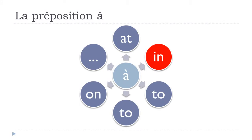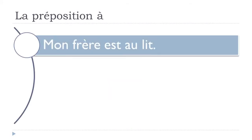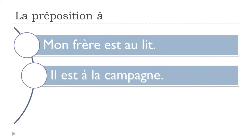Now the second category: the 'in' concept. First example: 'mon frère est au lit' — mon frère means my brother, lit means bed, so 'mon frère est au lit' means 'my brother is in bed'. Second example: 'il est à la campagne' — campagne means countryside — 'il est à la campagne', he is in the countryside.